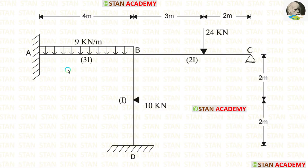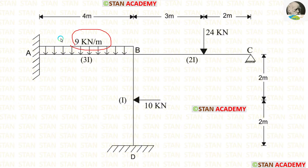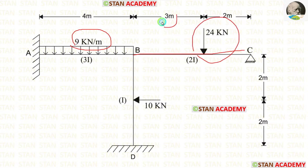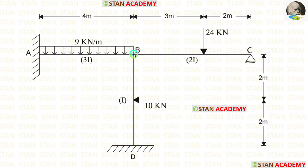In this frame we have three different parts. In the span AB we have a uniformly distributed load of 9 kN/m acting for the full span. In the span BC there is a point load of 24 kN acting at a distance of 3 meters from point B. In the vertical member BD we have a point load of 10 kN acting at the center.